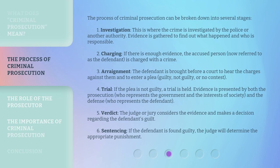Stage 4: Trial. If the plea is not guilty, a trial is held. Evidence is presented by both the prosecution, who represents the government and the interests of society, and the defense, who represents the defendant. Stage 5: Verdict. The judge or jury considers the evidence and makes a decision regarding the defendant's guilt. Stage 6: Sentencing. If the defendant is found guilty, the judge will determine the appropriate punishment.